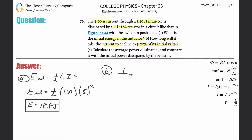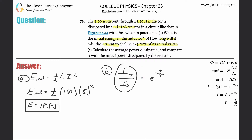The exponential decay formula says: current at some point in time equals the initial current multiplied by e raised to the negative elapsed time divided by the time constant. The initial current is 5 amps. To work with percentages, I divide both sides by the initial current, leaving a proportion on the left-hand side.